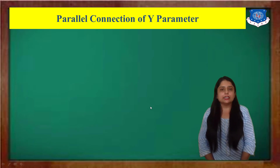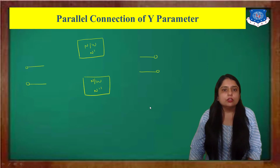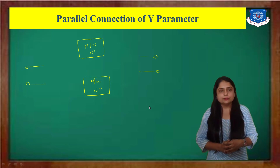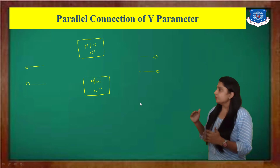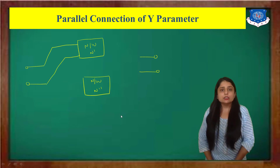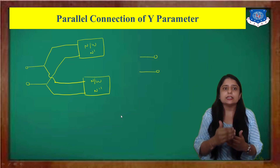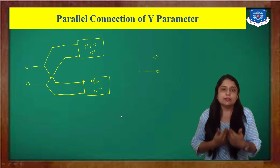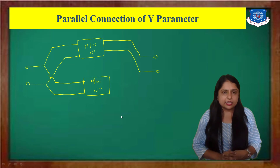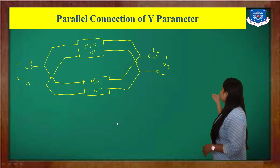Next, we discuss the Parallel Connection of Y-Parameter — the last topic of our chapter on two-port networks. We consider two networks, N-dash and N-double-dash. For a parallel connection, the input voltage V1 goes to both networks, and the same voltage is applied at the output as well. The overall voltages are V1 and V2, and overall currents are I1 and I2, with individual network voltages and currents labeled with dash and double-dash notation.